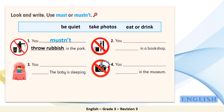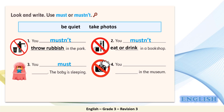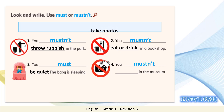Let's check your answers now. Two: You mustn't eat or drink in the bookshop. Three: You must be quiet — the baby is sleeping. Number four: You mustn't take photos in the museum. Great job, my students.